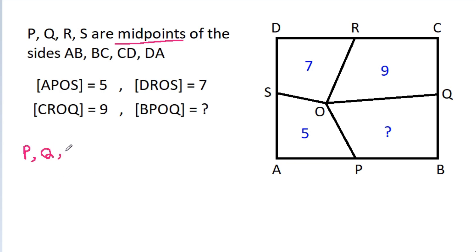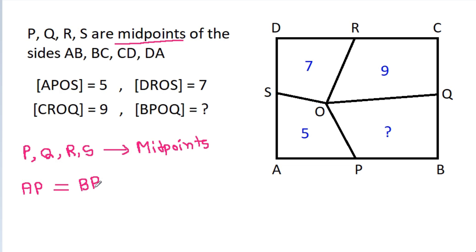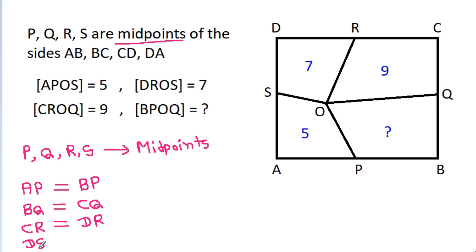Since P, Q, R, S are midpoints, we have: AP is equal to BP, BQ is equal to CQ, CR is equal to DR, and DS is equal to AS.